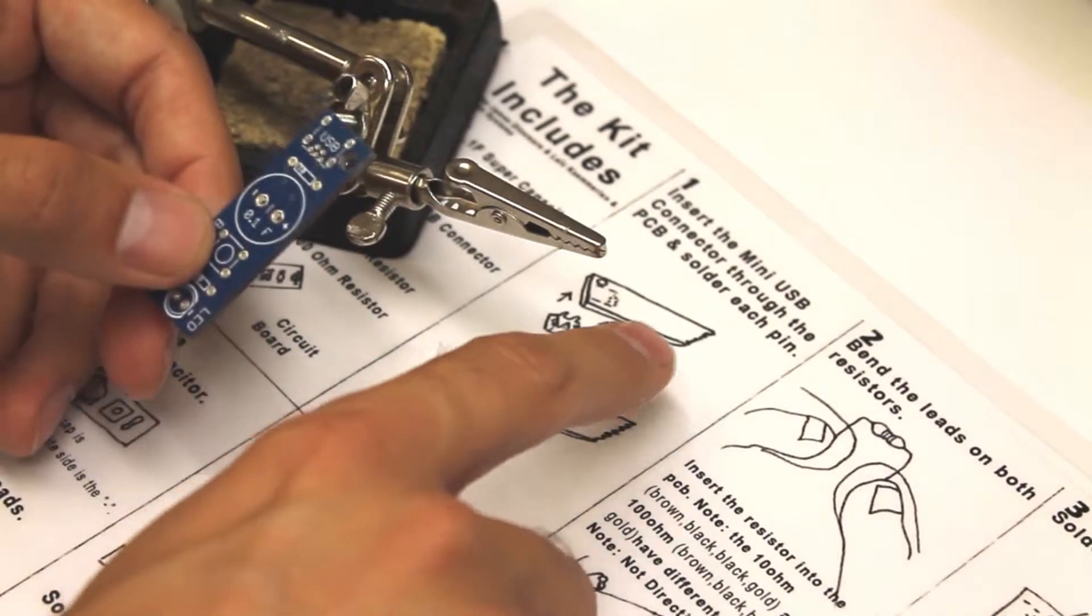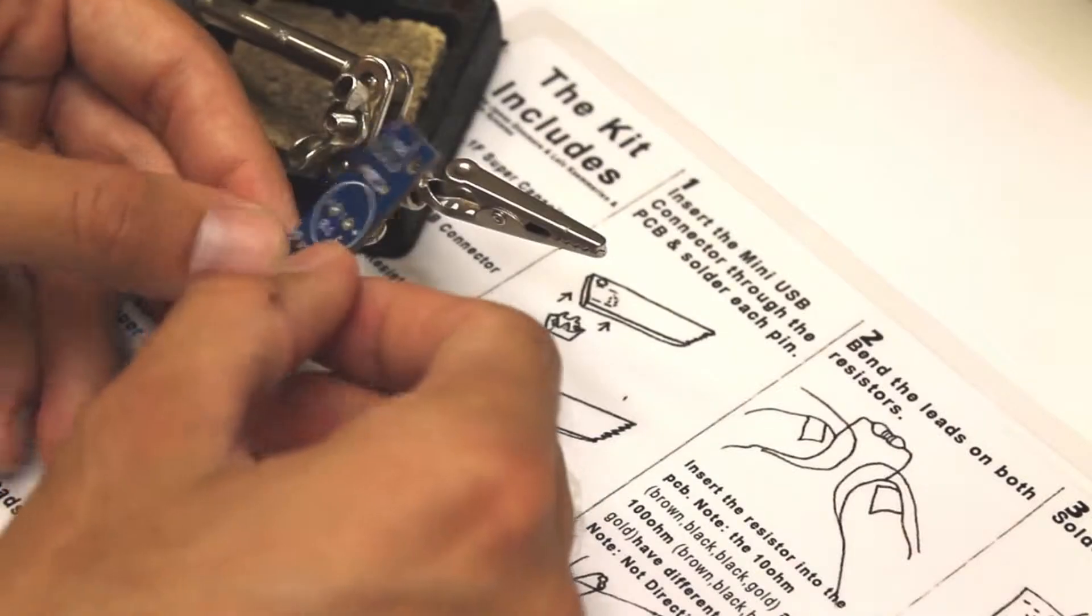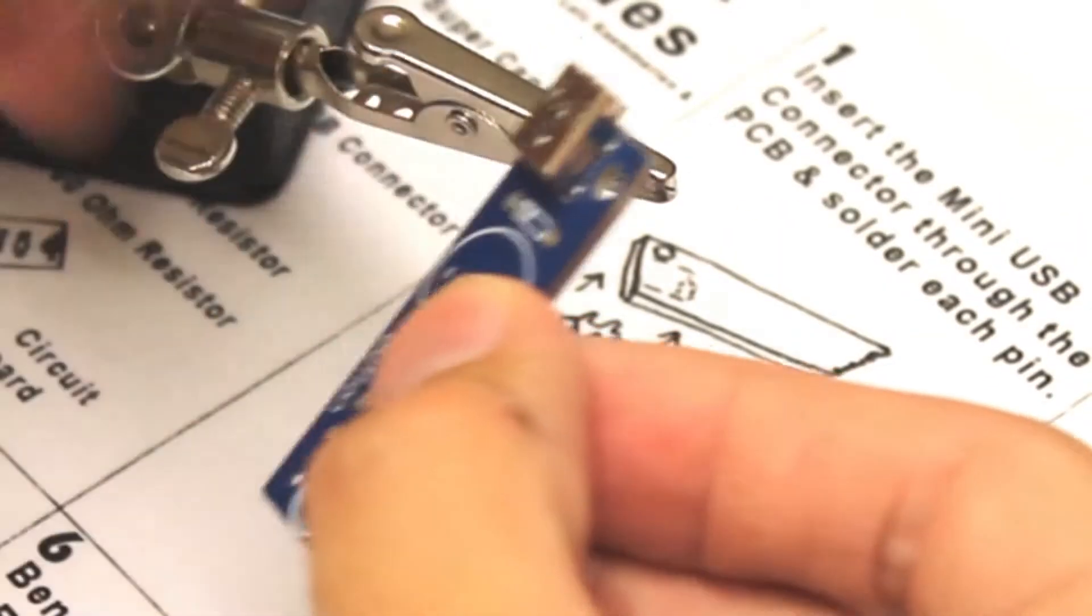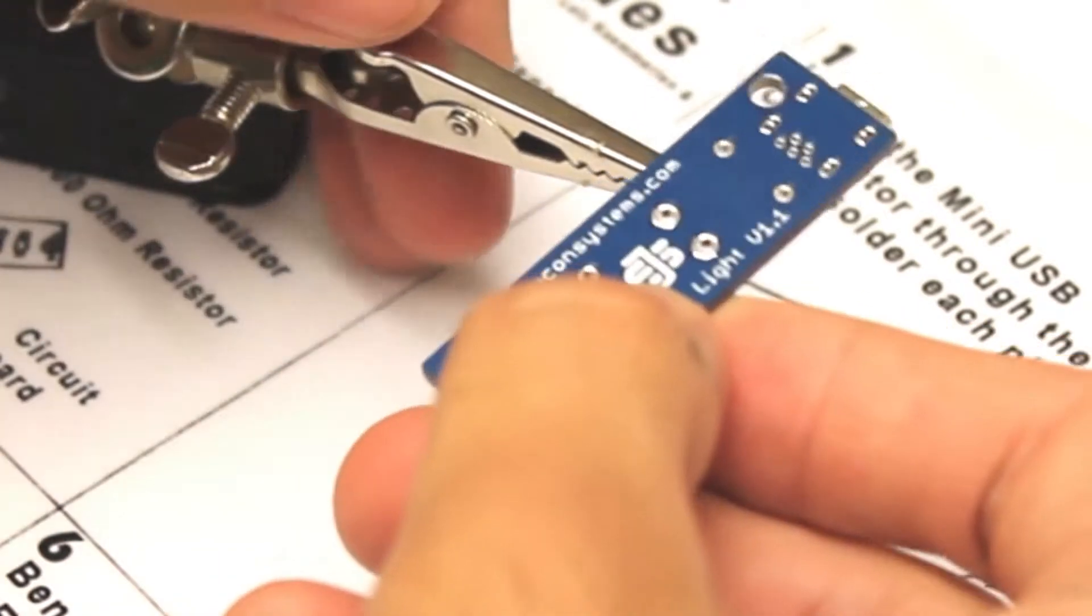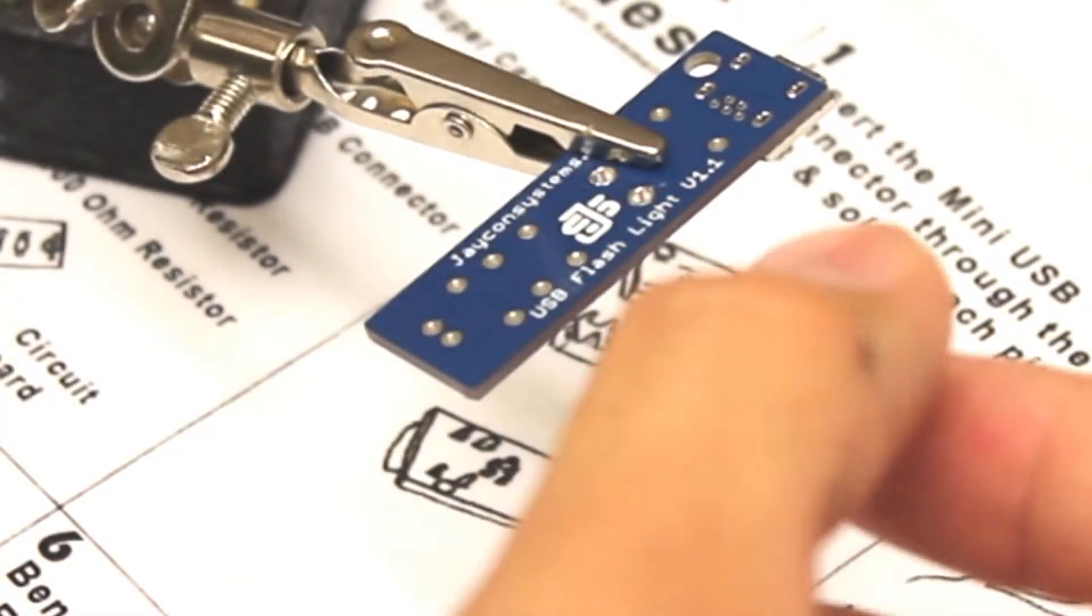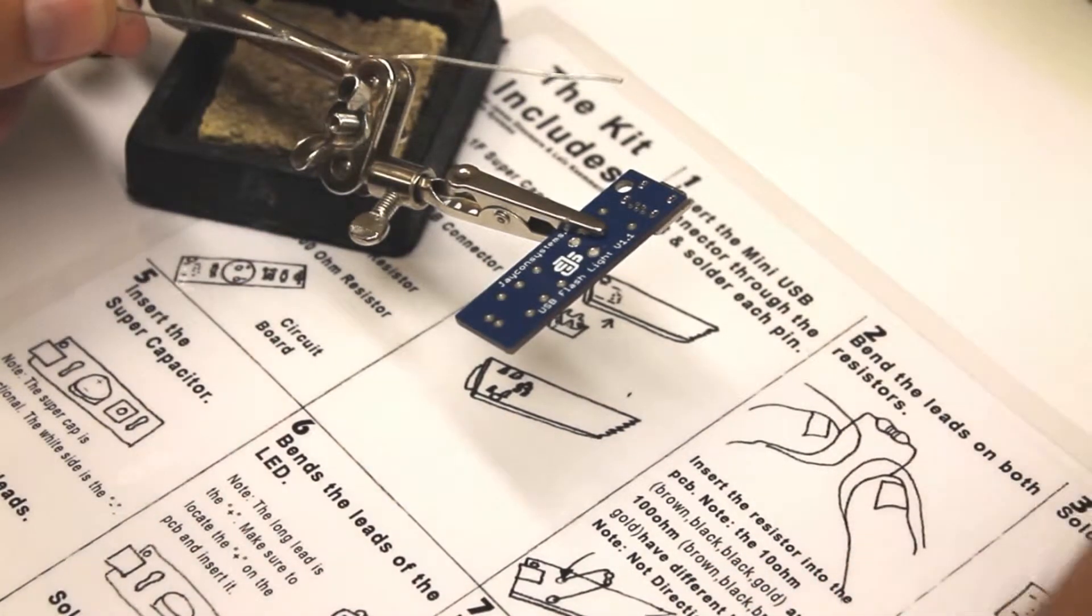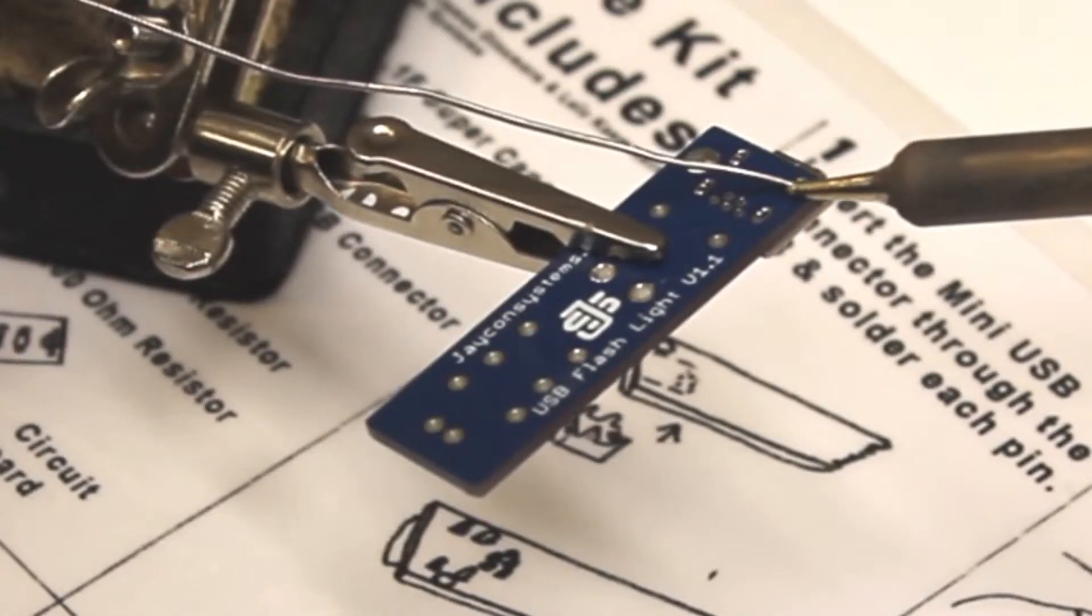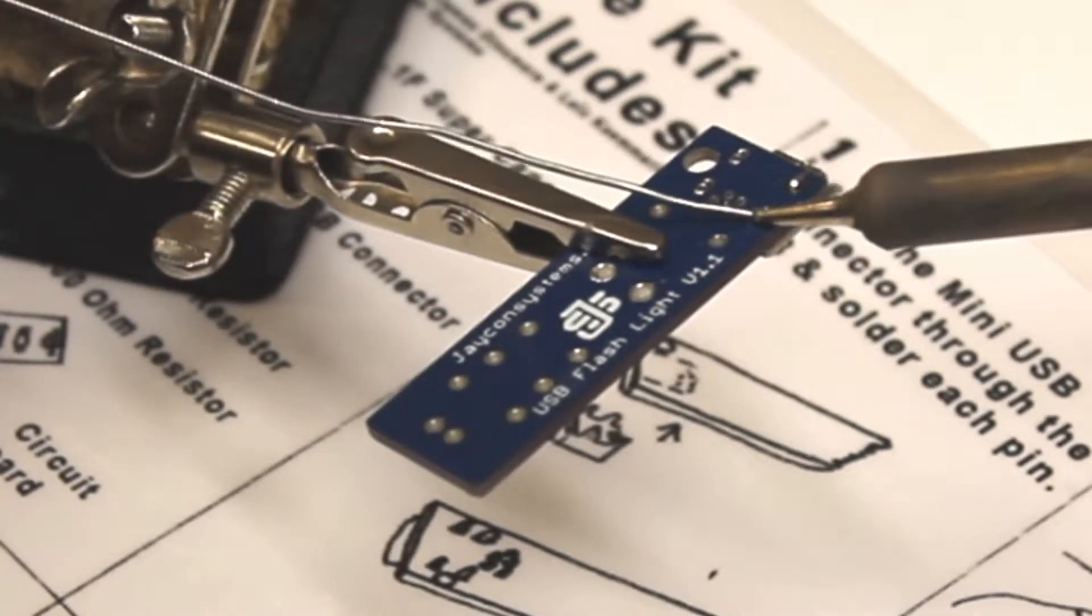The first item is the mini USB connector. Locate the mini USB connector and insert it into the corresponding holes. Make sure to put the top side on the top and the bottom on the bottom. Make sure you clean your soldering iron. You want a clean tip. Simply place the solder paste right over the pin and apply heat to both the pin and the circuit board with the soldering iron. Repeat until all pins are completed.